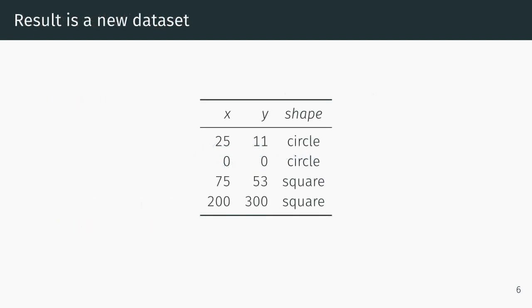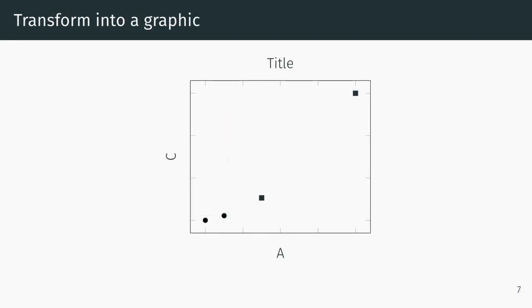Given that we have a certain rectangle area available to us, we've scaled these coordinates and said what shapes we're going to use. Then we can transform this data set into a graphic. This is the graphic with two circles and two squares.